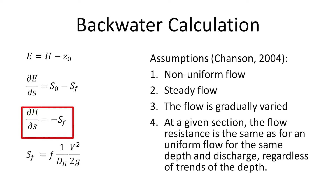These equations are derived assuming: 1) the flow condition is non-uniform flow; 2) a steady flow condition; 3) the flow is gradually varied, i.e. not rapidly varied such as a hydraulic jump; and 4) at a given section, the flow resistance is the same as for a uniform flow for the same depth and discharge, regardless of trends in depth. This final assumption means we can define the friction slope using the Darcy friction factor, f, originally derived for uniform equilibrium flows.